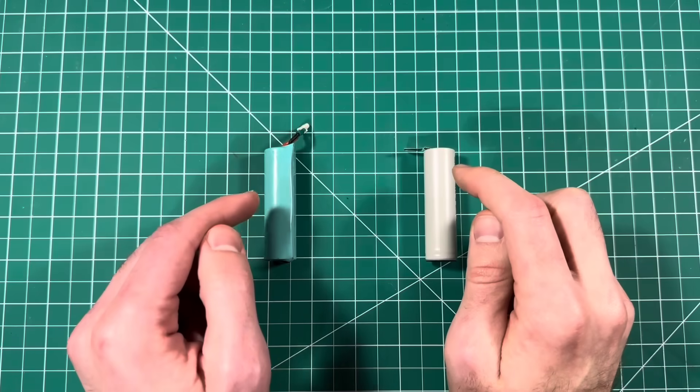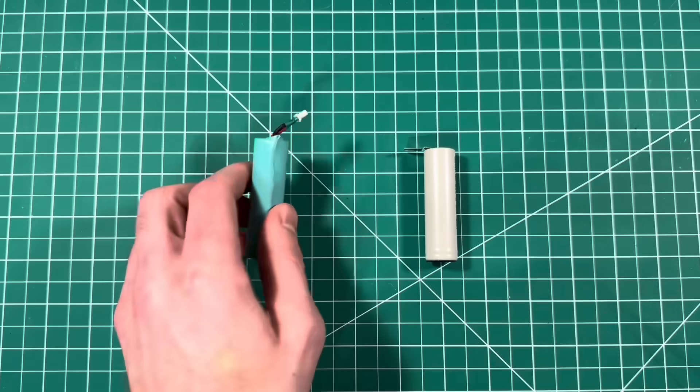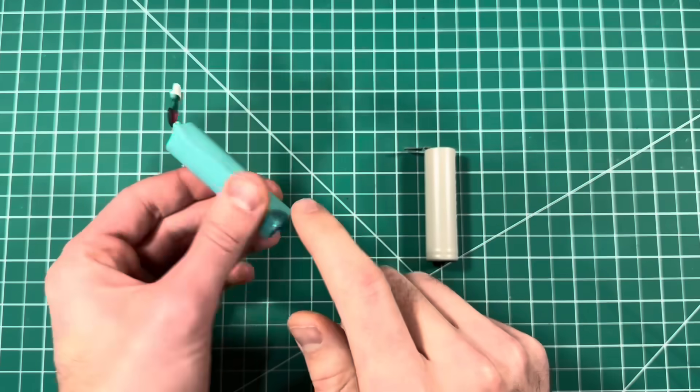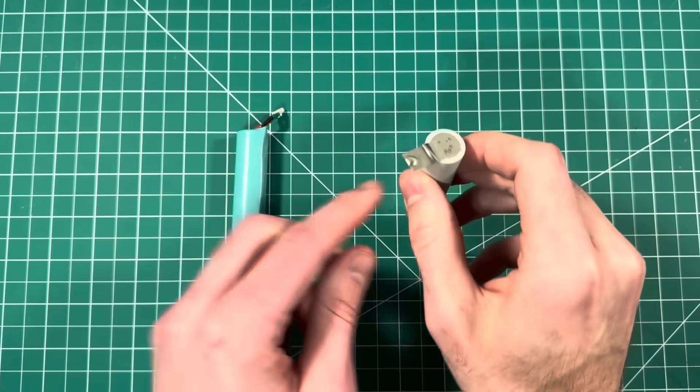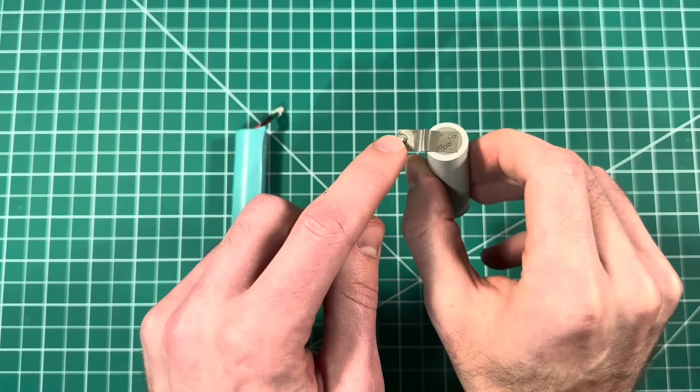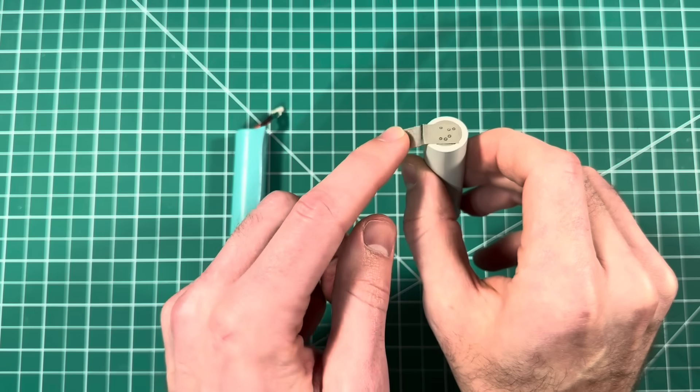There are two methods to adding plugs to these cells. Method one would be soldering directly to the terminals. Method two being spot welding a tab and then soldering onto the tab and adding your plug onto the end.